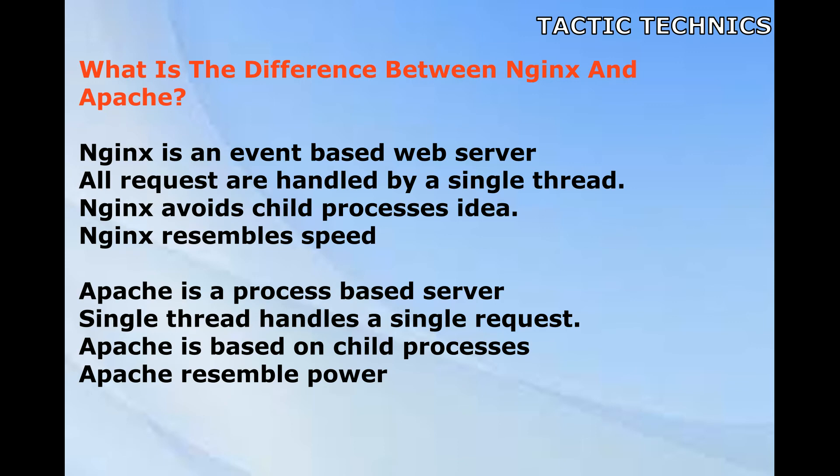What is the difference between Nginx and Apache? Nginx is an event-based web server; all requests are handled by a single thread. Nginx avoids child processes and resembles speed. Apache is a process-based server; a single thread handles a single request. Apache is based on child processes and resembles power.